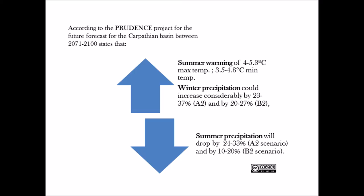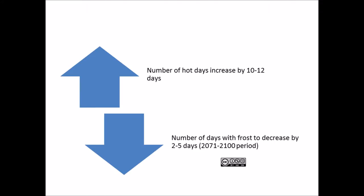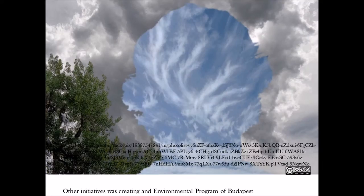According to Prudence project resulting in the forecast of Carpathian Basin between 2071 and 2100 states that summers will be hotter, summer precipitation will drop while winter precipitation will increase. Moving the climate from a continental climate to a Mediterranean climate and the whole of Europe faces an increase of 3-4 degrees Celsius average temperature.